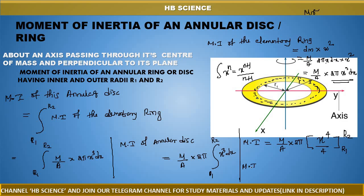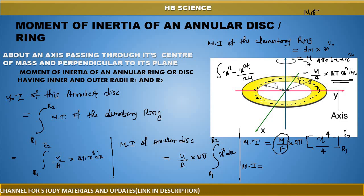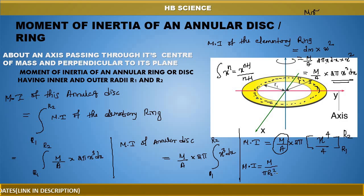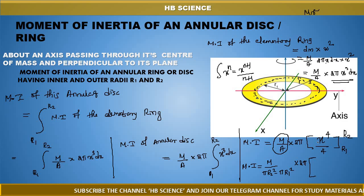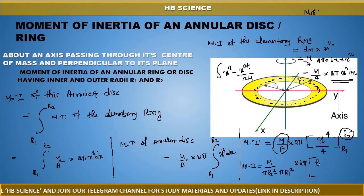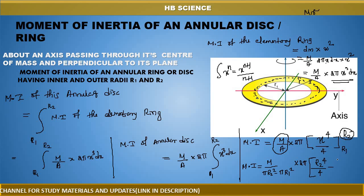Now substitute mass by area: M/A equals M divided by (π·R2² − π·r1²). Multiply by 2π. Applying the limits — upper limit r2 gives r2⁴/4, and lower limit r1 gives r1⁴/4. So we have r2⁴/4 minus r1⁴/4.